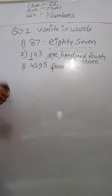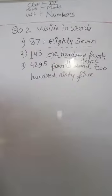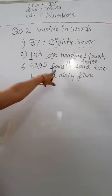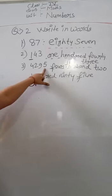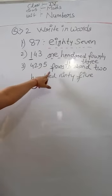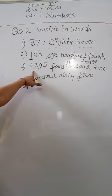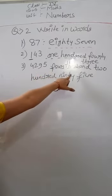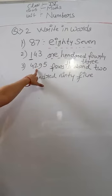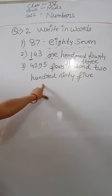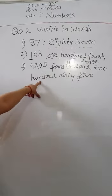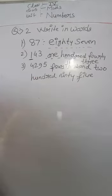4295 — how to write this number in words? We have four thousand, then what is the place value of 2? It's 200. So we write 200 here. Then we have 95. All clear?